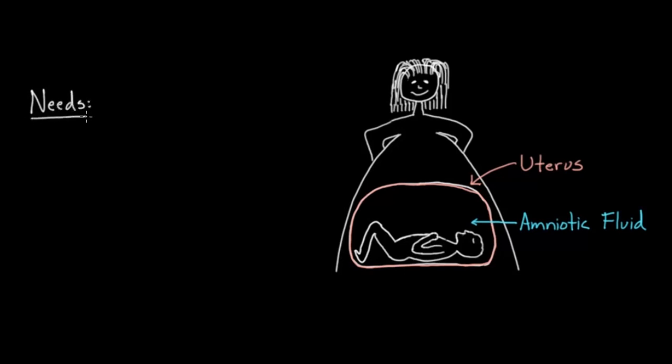So let's think about what those needs are. Let's enumerate them. One of them is oxygen. So how does the baby take in oxygen if it's not getting it from the lungs? And the lungs are actually full of amniotic fluid, by the way. How is it able to get nutrients? Things like sugar or glucose that it needs for energy. So I'll put example glucose.